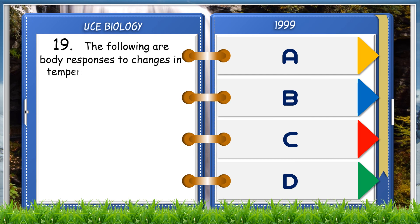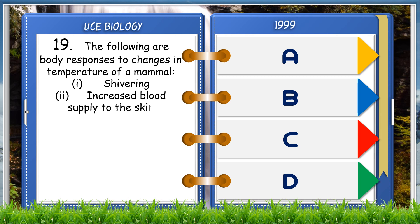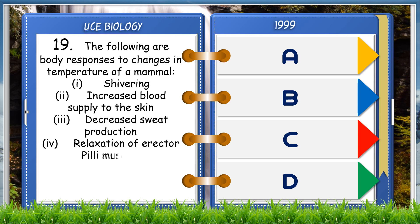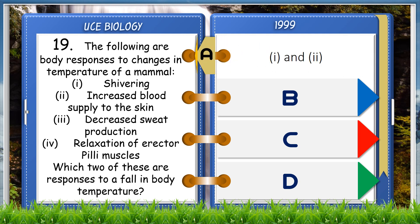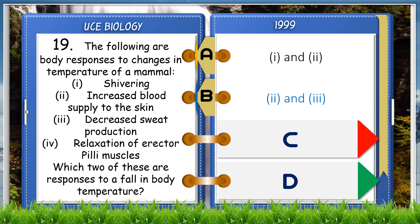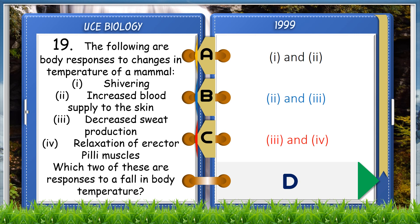The following are body responses to changes in temperature of a mammal: 1. Shivering, 2. Increase the blood supply to the skin, 3. Decrease in sweat production, 4. Relaxation of erector muscles. Which two of these are responses to a fall in body temperature? A. 1 and 2, B. 2 and 3, C. 3 and 4, D. 1 and 3. The answer is D, 1 and 3.